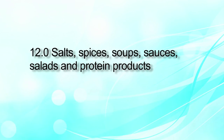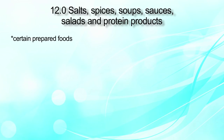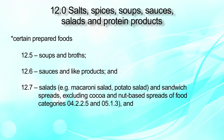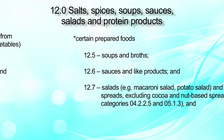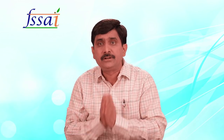Category number 12 covers salt, spices, soups, sauces, salads and protein products from 12.1 to 12.10. Category 12.1 talks about salt and salt substitutes, herbs, spices, seasoning, vinegars and mustards. This category also includes soups and broths, sauces and like products, salads, soybean-based seasoning and protein products other than from soybean. The detailed description about this category is given in the slide.